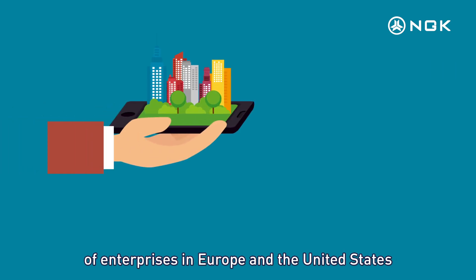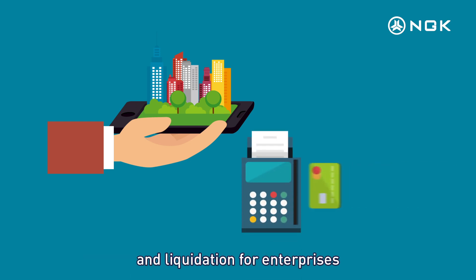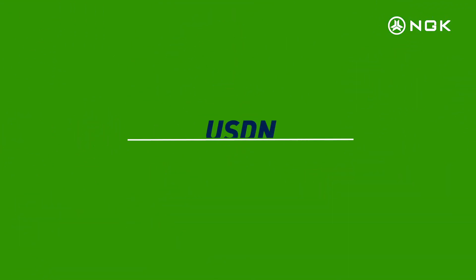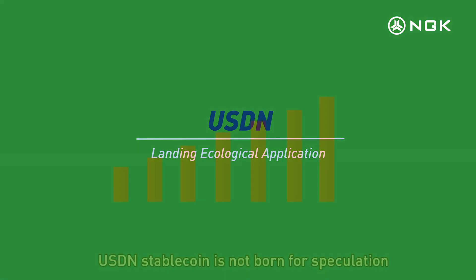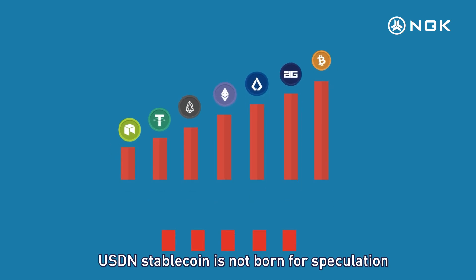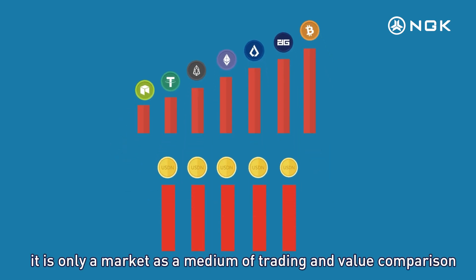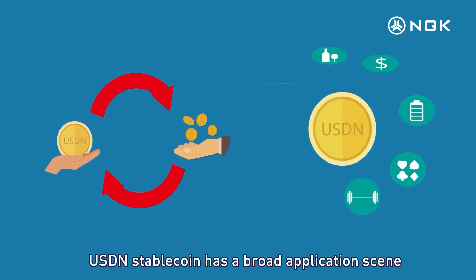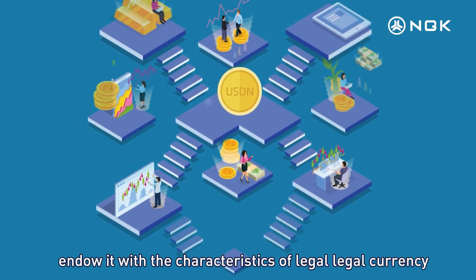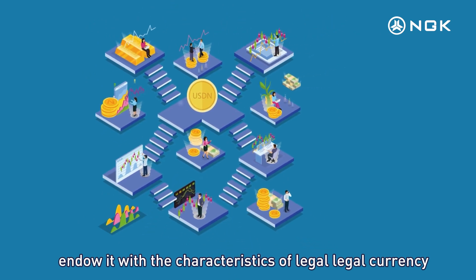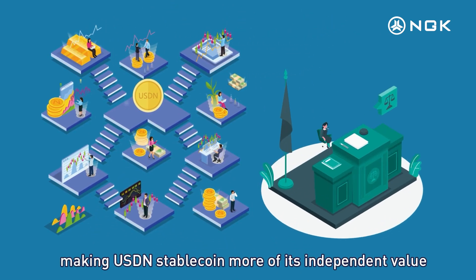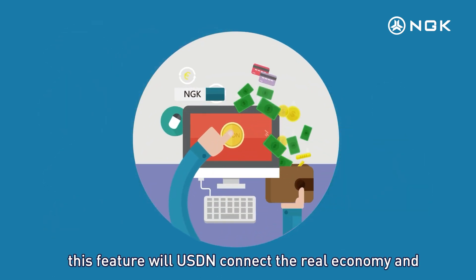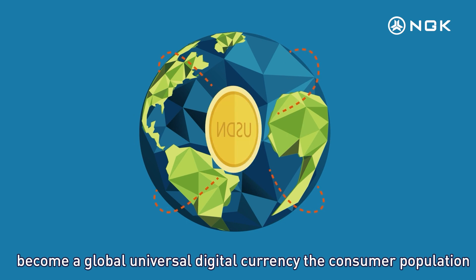Fifth, digital gain platform computing power application and future main network transaction value interaction. Sixth, facilitating enterprise application scenarios in Europe and the United States and solving payment and liquidation problems. USDN stablecoin is not born for speculation — it is only a medium for trading and value comparison, with broad application scenes endowing it with the characteristics of legal currency.